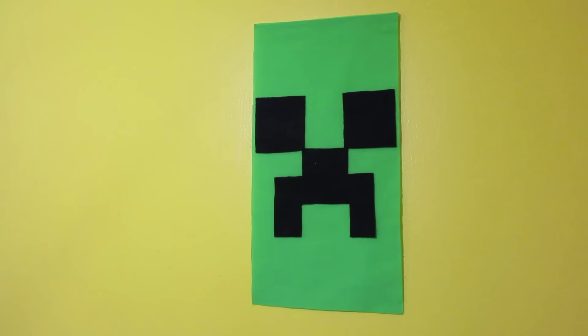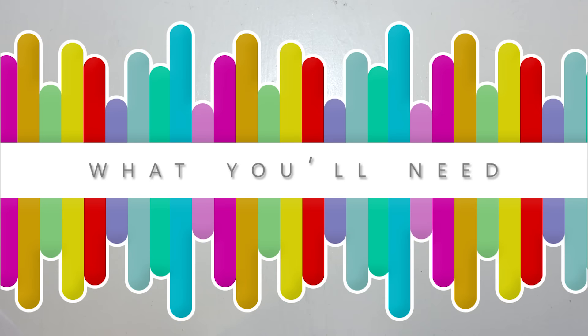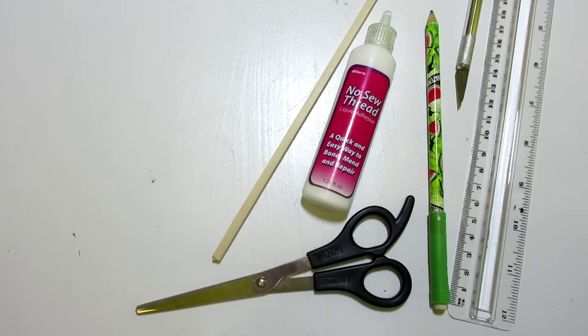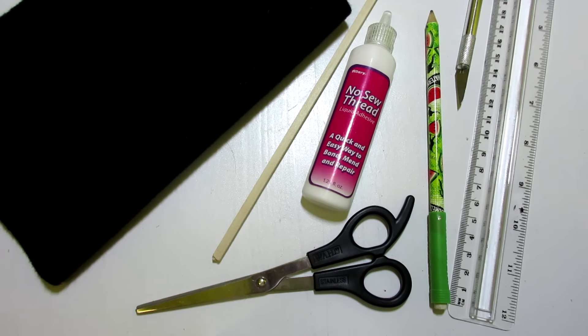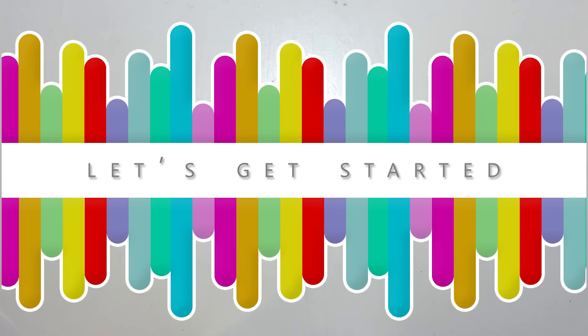Now I'm going to be showing you how to make the Minecraft Creeper banner. So once again, here's what you'll need. A ruler, a pencil, some fabric glue, scissors, an exacto knife, a wooden strip, some black felt, a white crayon, and some green fabric. So let's begin.